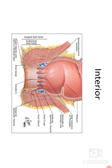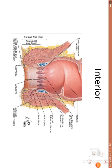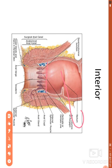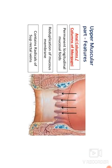Moving to the interior of the anal canal: the mucosa is divided into three zones — the upper, middle, and lower parts — demarcated by the pectinate line and the white line or Hilton's line. The upper part is also called the muscular part.